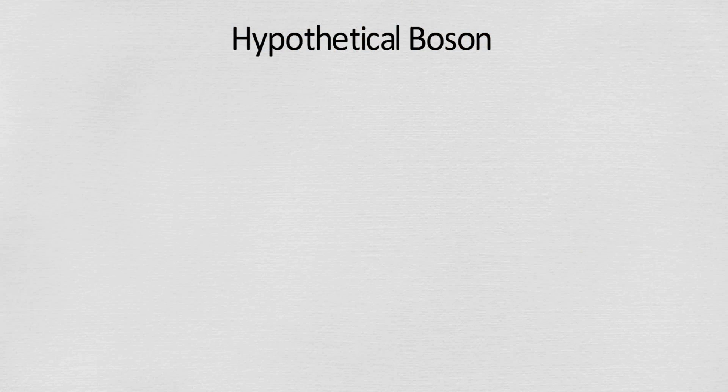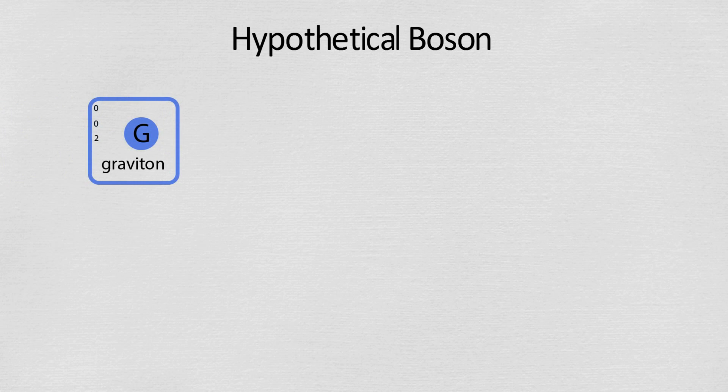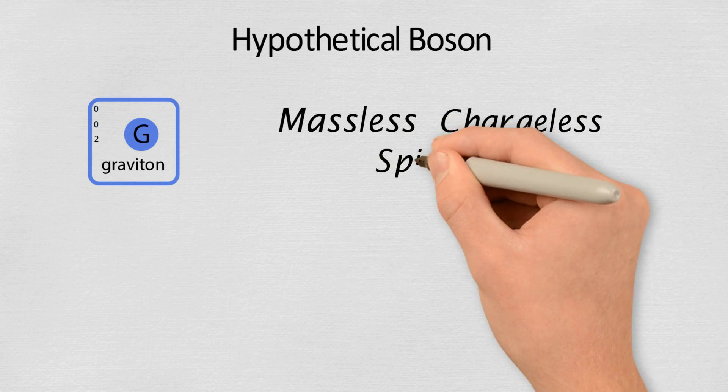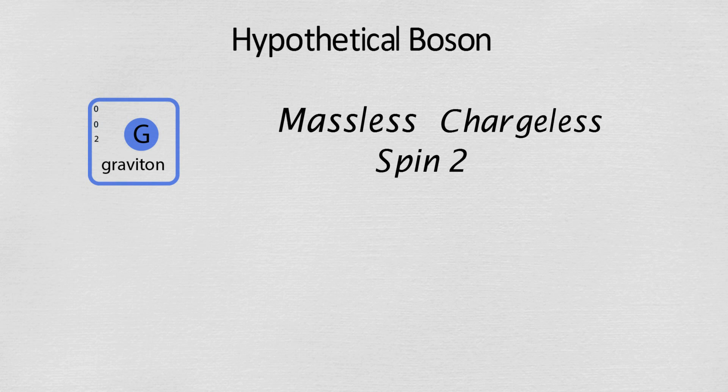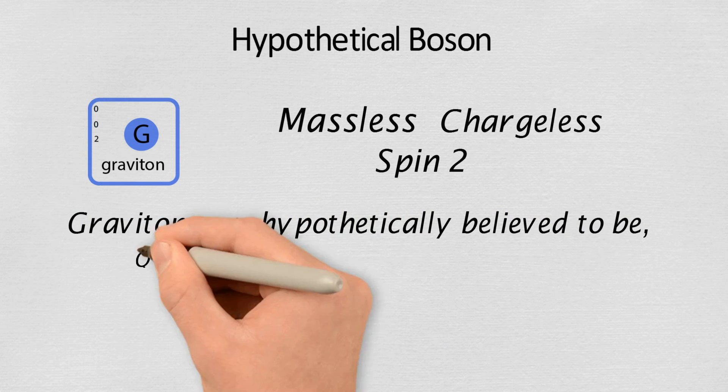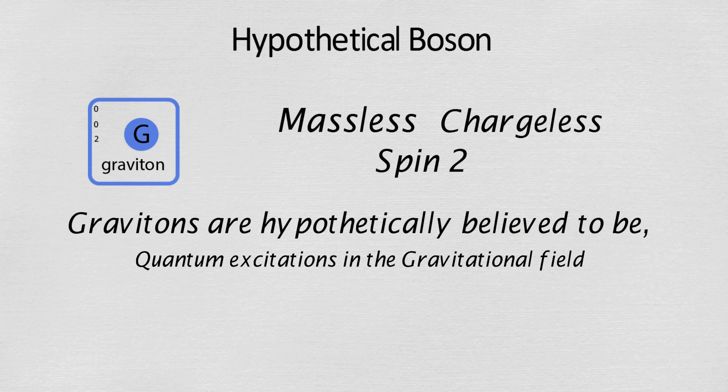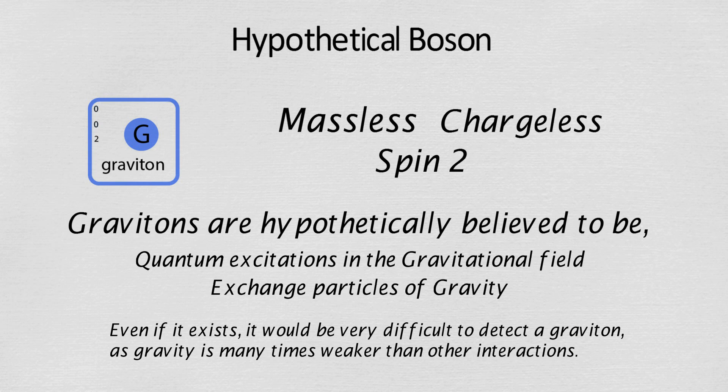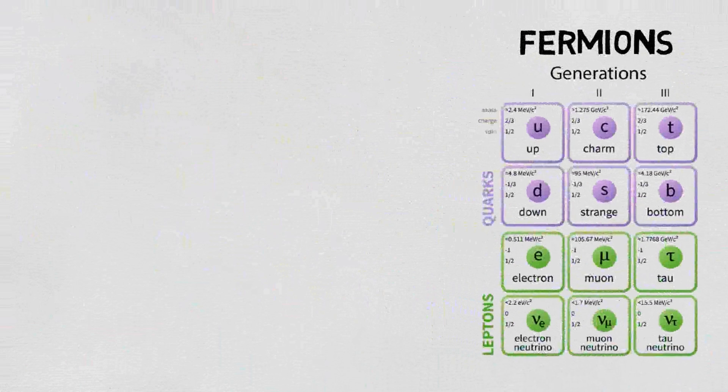Till now we have seen elementary particles responsible for three out of four fundamental interactions. The fourth fundamental interaction, gravity, does not have a boson, at least not till now. Graviton is a hypothetical boson predicted to be massless, chargeless, and have a spin value of two. If it exists, it is believed to be the exchange particles for gravity. Even if it exists, it is very difficult to detect a graviton as gravity is many times weaker than other interactions. So we won't be seeing graviton on the standard model for a long time.